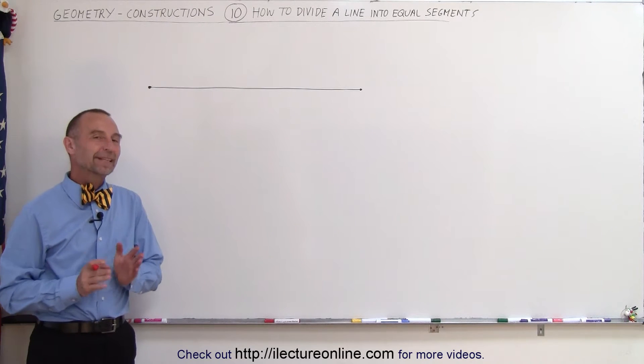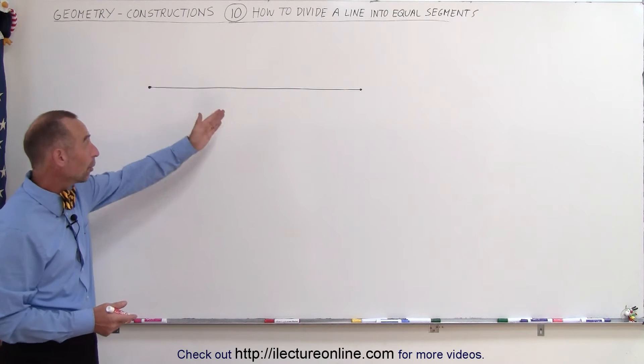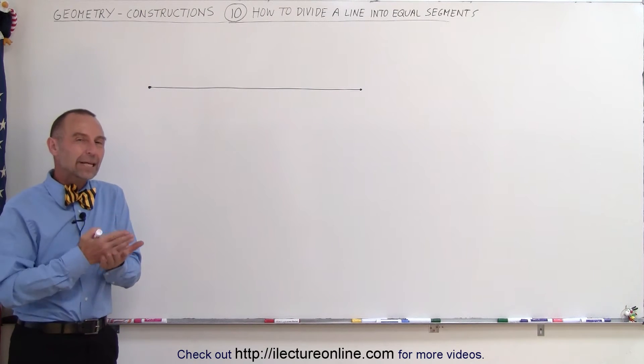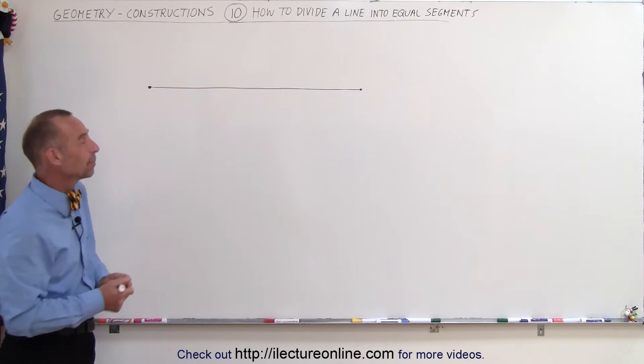Welcome to ElectronLine. In this video we're going to show you how to take a line like this from point A to point B and divide it into an equal number of segments. In this case we're going to divide it into let's say three segments.